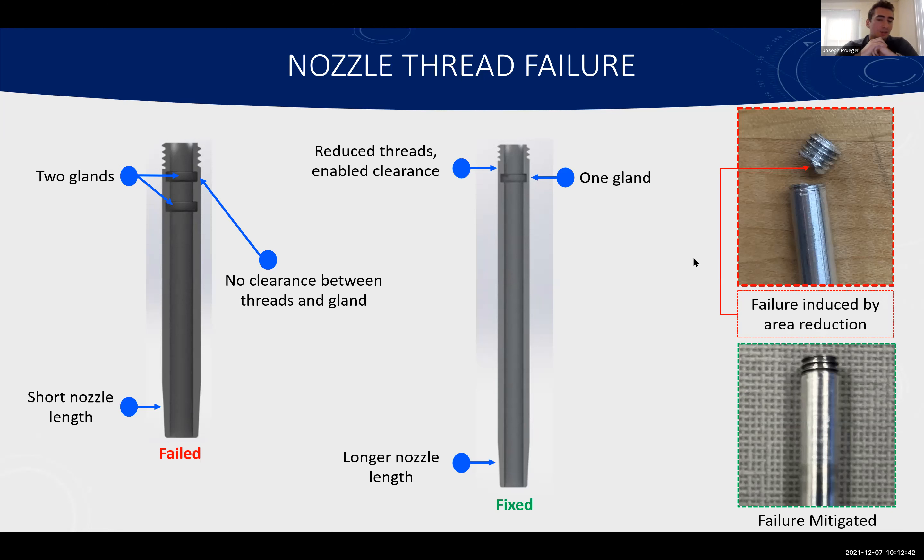So to mitigate that failure, as can be seen by the green checked figure in the bottom right corner, we reduced the threads of engagement and it only included one o-ring gland. This actually simplified the design and made it easier for us to put the o-ring into the nozzle. Also during testing, we needed to increase the length of the nozzle to make sure we can suck up the maximum amount of fluid necessary.